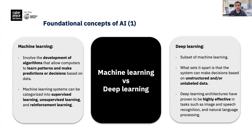Going forward, it is important to demystify some foundational concepts of AI. We can look at AI — artificial intelligence — as the broadest concept, a field of study that has the goal of creating machines that replicate human intelligence. Machine learning is then a subset of AI focused on learning from data, be it via supervised, unsupervised, and reinforcement learning.